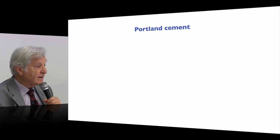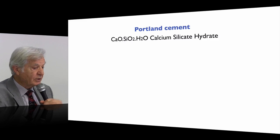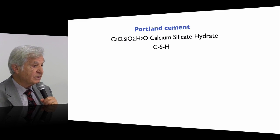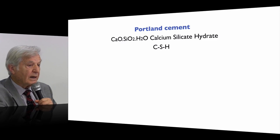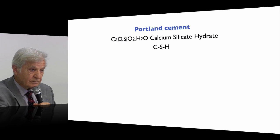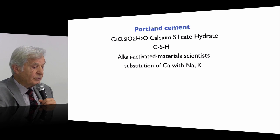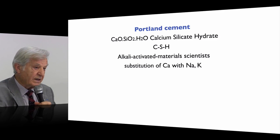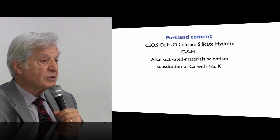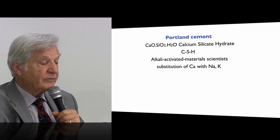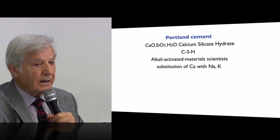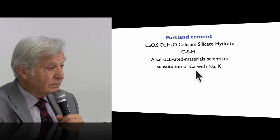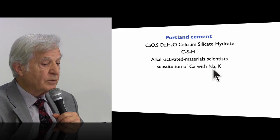But cementitians who are accustomed to Portland cement terminology — with their calcium silicate hydrate, CaO, CO2, H2O, that is C-S-H — when tackling so-called alkali activation or geopolymer, substitute the calcium with the sodium and the potassium, and are starting to make a big chemical mistake. Calcium is known to be insoluble in water, so you may have a calcium silicate hydrate, you don't care about the water, the calcium still remains in place, and you may use this terminology.